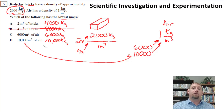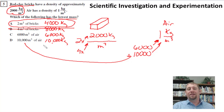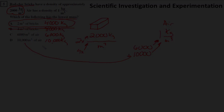So the lowest mass is actually, as I suspected, 2 meters cubed of bricks — even though they are very dense — because it does matter how much air we have.